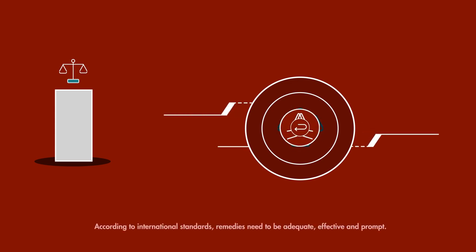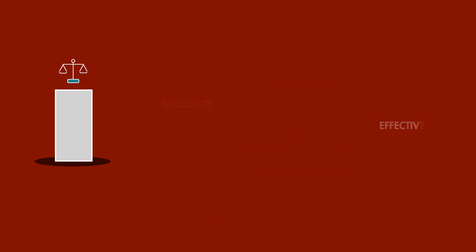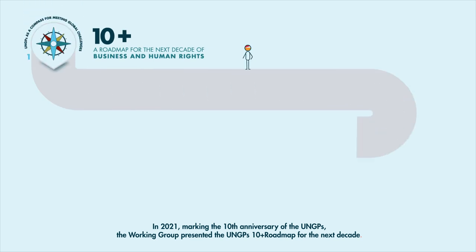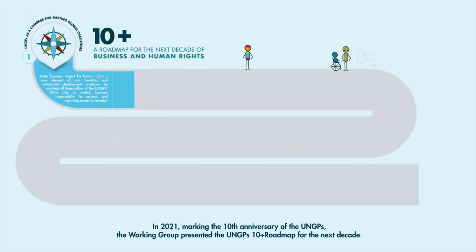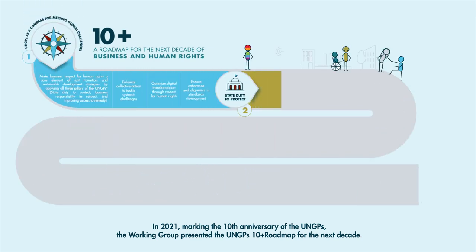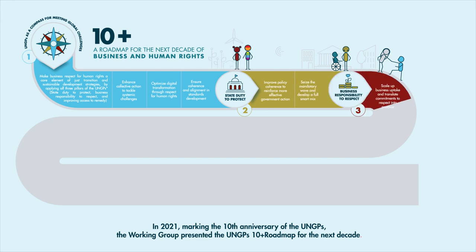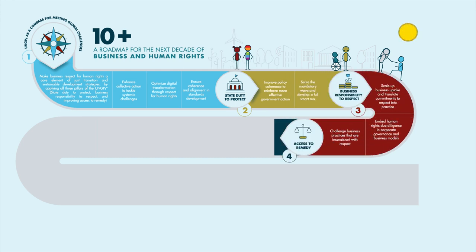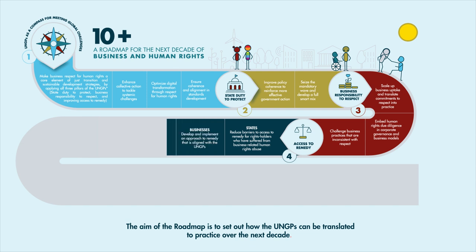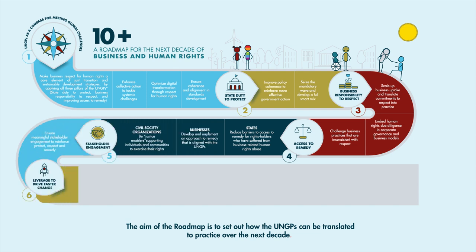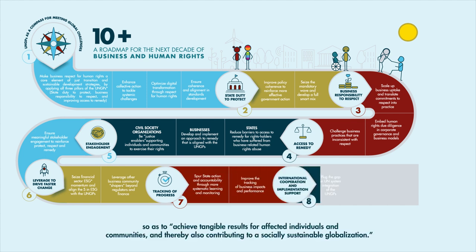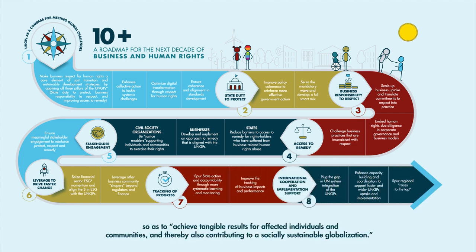According to international standards, remedies need to be adequate, effective, and prompt. In 2021, marking the 10th anniversary of the UNGPs, the working group presented the UNGPs 10-plus roadmap for the next decade. The aim of the roadmap is to set out how the UNGPs can be translated to practice over the next decade, so as to achieve tangible results for affected individuals and communities, and thereby contribute to a socially sustainable globalization.